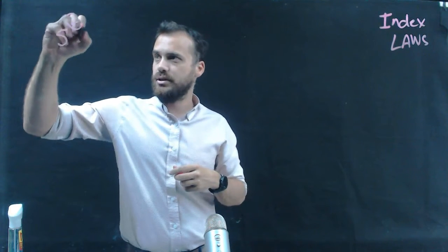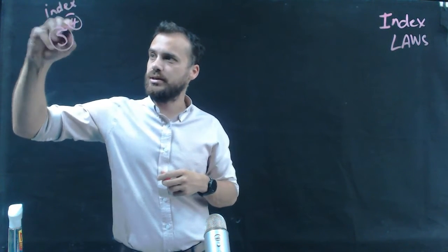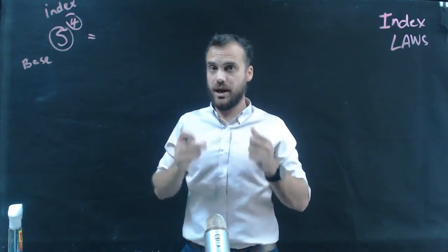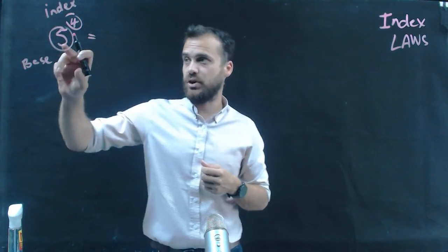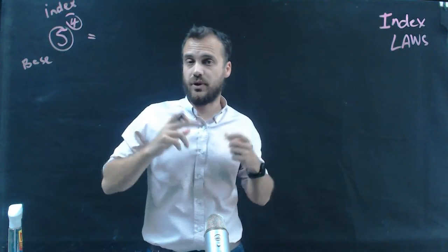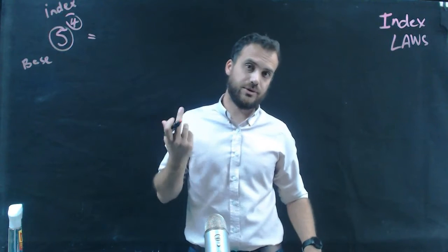Now, this is our index, and this is what we call the base. 5 to the power of 4 means 5 multiplied by itself 4 times. And if I'm to write that out in full, it looks like that.